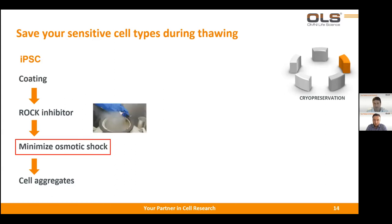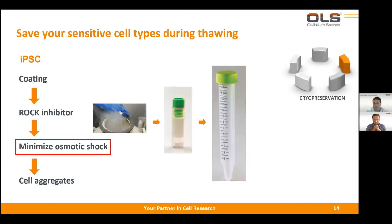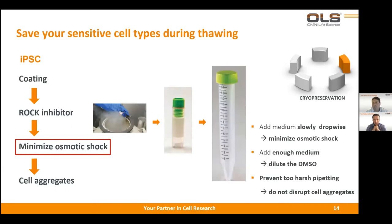When you take a cryovial with iPSCs from liquid nitrogen and put the cells into a conical tube, it's important to add medium slowly in a drop-wise manner to minimize osmotic shock. It's also important to add enough medium to dilute the DMSO — since DMSO at higher concentration is toxic to the cells. It's also important to prevent overly harsh pipetting, because you do not want to disrupt the cell aggregates.